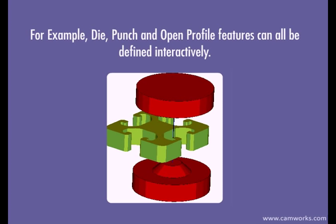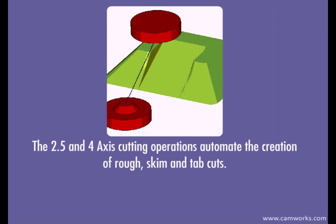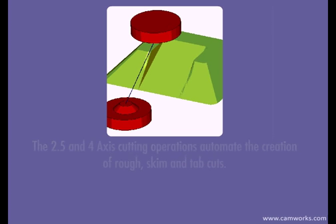For example, die, punch, and open-profile features can all be defined interactively. The 2.5 and 4-axis cutting operations automate the creation of rough, skim, and tab cuts.